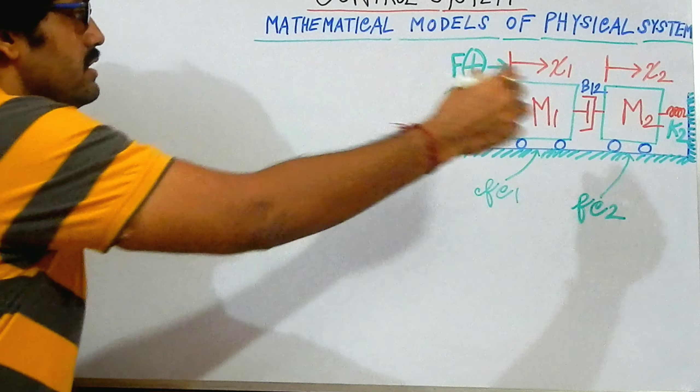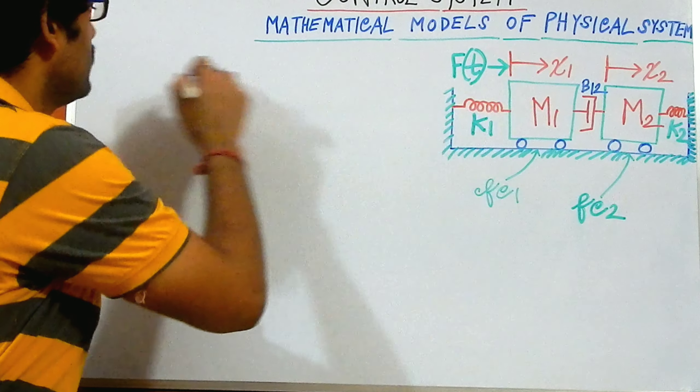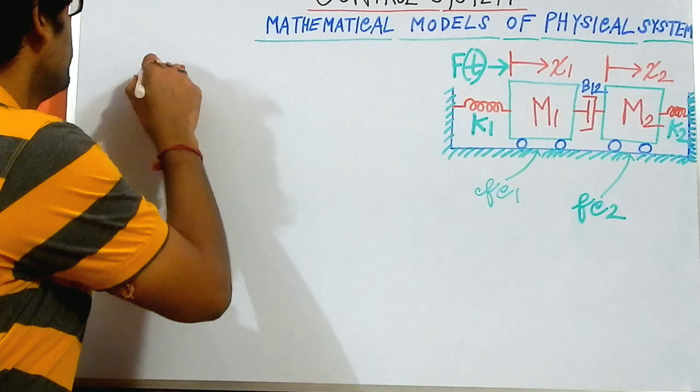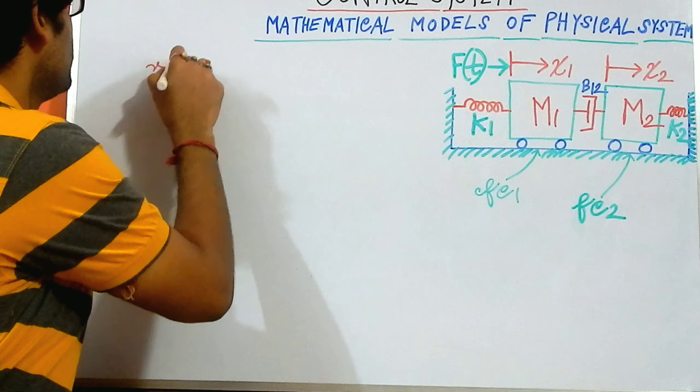Welcome back. This is our third problem. I would like to draw the circuit using a nodal diagram. This one is x1t and this one is our x2t.